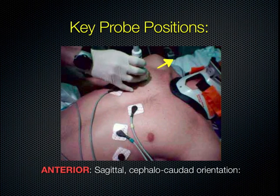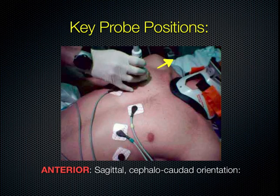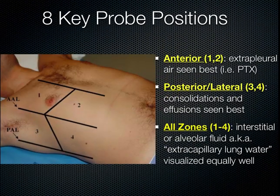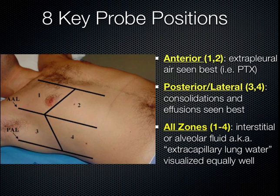There are several key probe positions. The indicator for evaluation of the anterior chest should go towards the head — this is the orientation marker. Anteriorly, we look at the sagittal orientation, the cephalocaudate orientation intersecting two ribs and the pleural line beneath. Laterally, with the probe indicator again towards the head, we achieve a coronal picture.